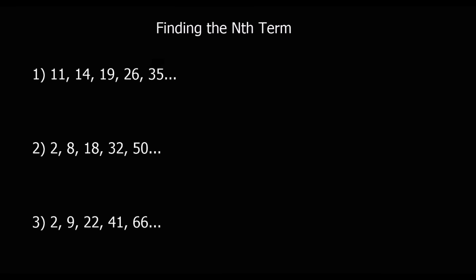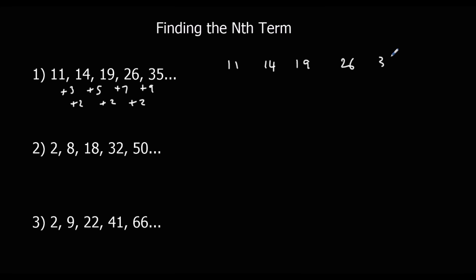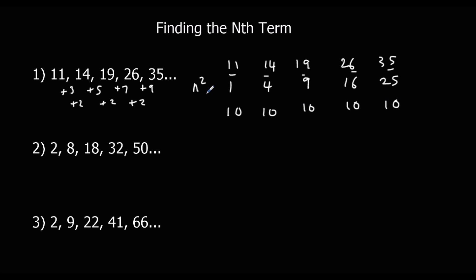Here are three for you to try — pause the video and give them a go. First one: the first differences go plus three, plus five, plus seven, plus nine, so the second difference is two. Half the second difference gives one, so it's n squared. Writing n squared — one, four, nine, sixteen, twenty-five — and taking it away from the original sequence leaves ten every time. So the answer is n squared plus ten.